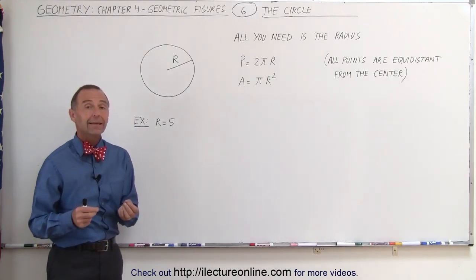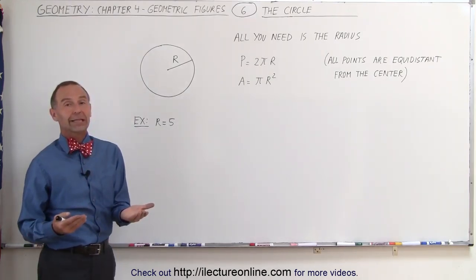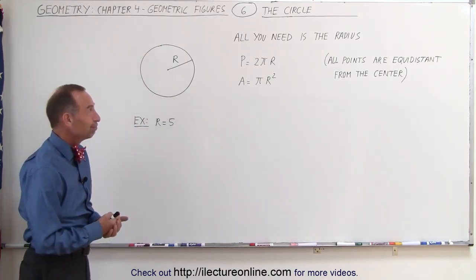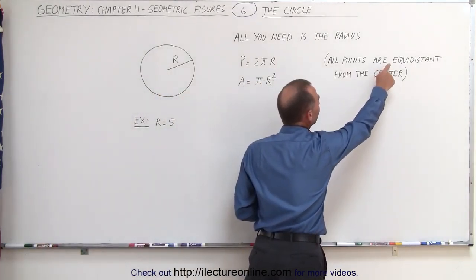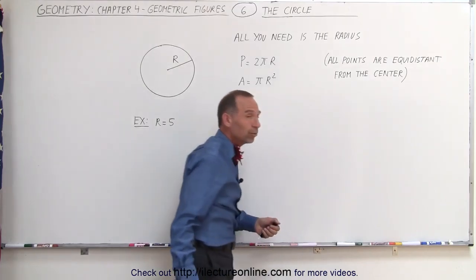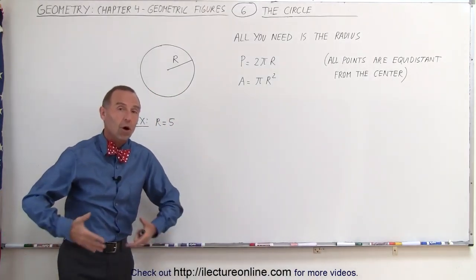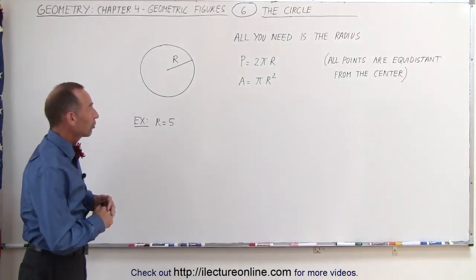It turns out the only thing you need to know about a circle is the radius. That's because all the points on the circle are equidistant from the center. So the radius really defines all of what you need to know about the circle.